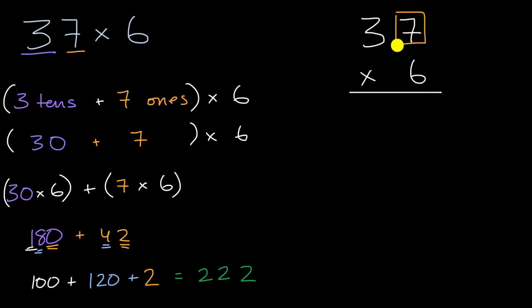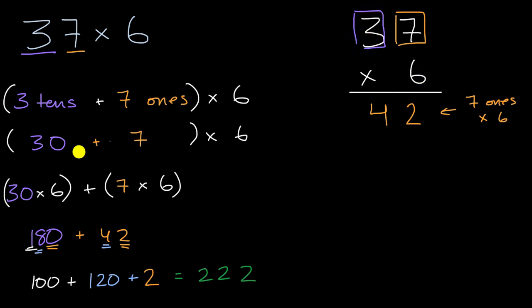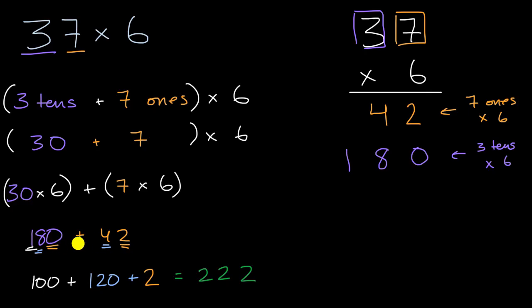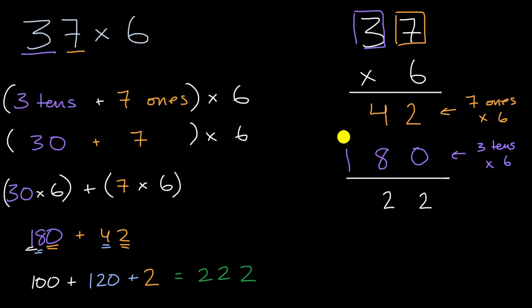Let's do the ones first. Seven ones times six is 42 — four tens plus two ones. That's seven ones times six, or seven sixes. Then we multiply three tens times six, which is 30 sixes, or 180: one in the hundreds place, eight tens, zero ones. Now it's easy to add everything up. Two ones plus zero ones is two ones. Four tens plus eight tens is 12 tens, so I put two tens and carry the 100. Then 100 plus 100 is 200. So there you have it: 222.